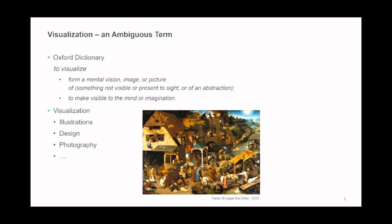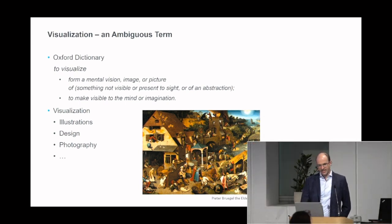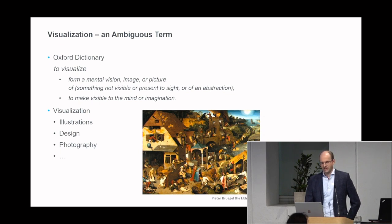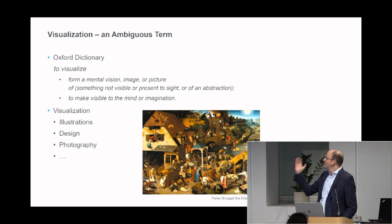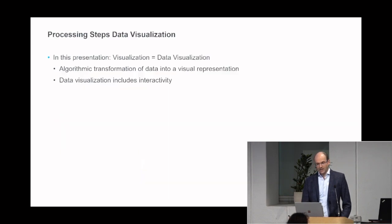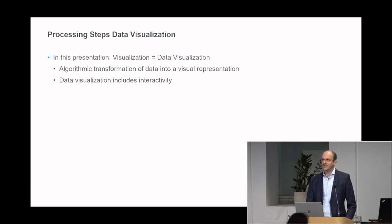It's not just one specific type of visualization — there are many concepts about visualization. If you look at the Oxford Dictionary, to visualize is to form a mental vision, image, or picture of something; to make visible to the mind or imagination. Of course, if we are creating pictures or images, this also helps form a mental image, but it's something different. Visualization can also be illustrations, design, photography, paintings. Sometimes pictures are worth more than a thousand words. As part of this presentation, I'm talking about data visualization — a very specific type, not visualization in general.